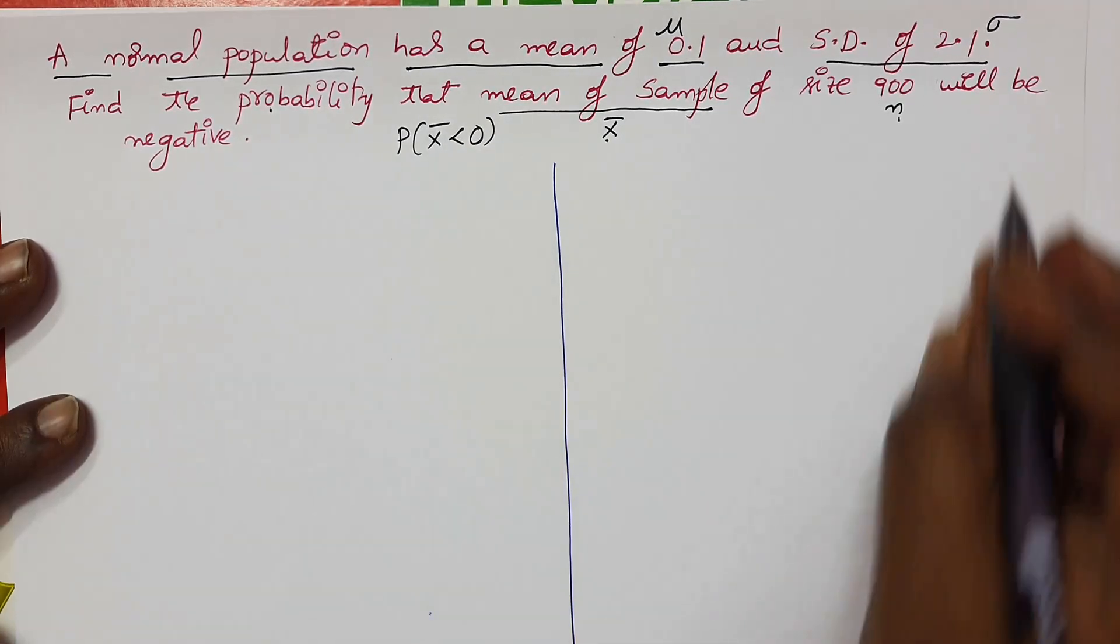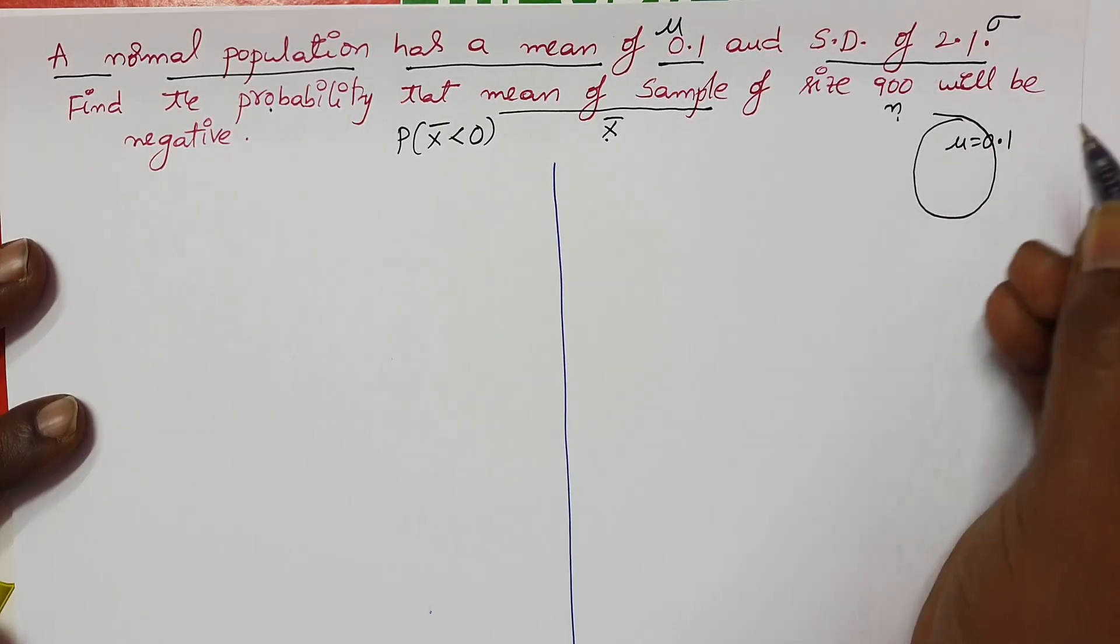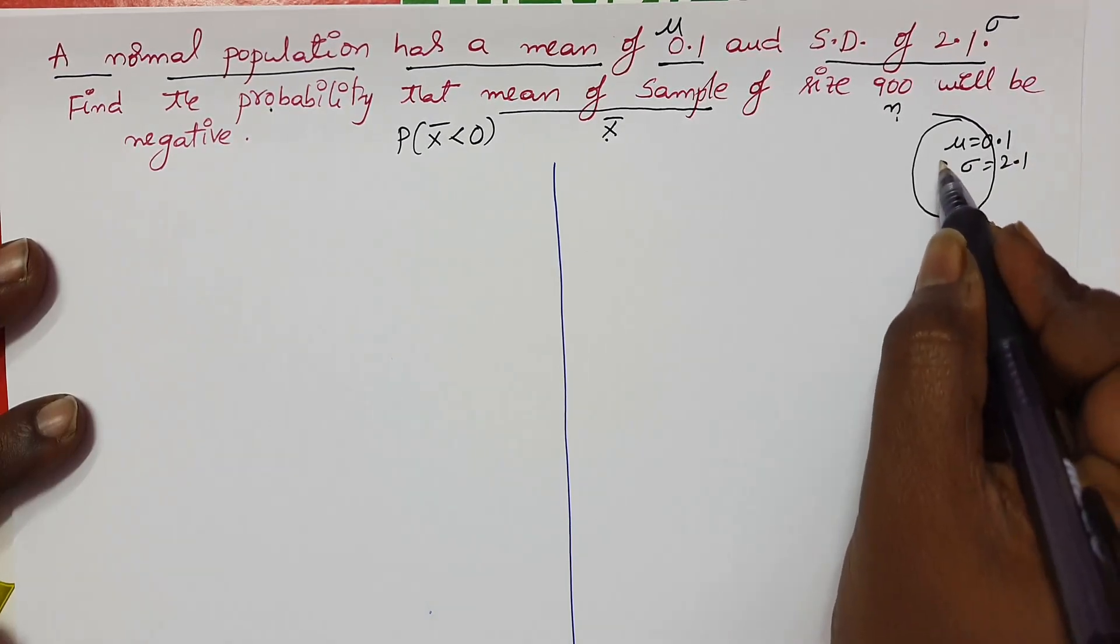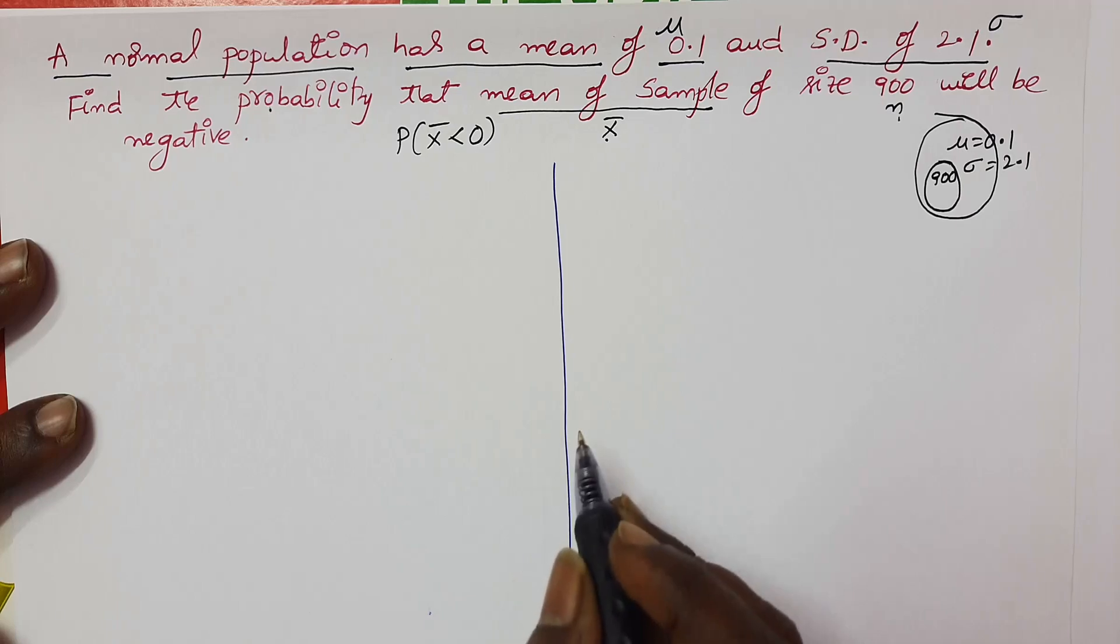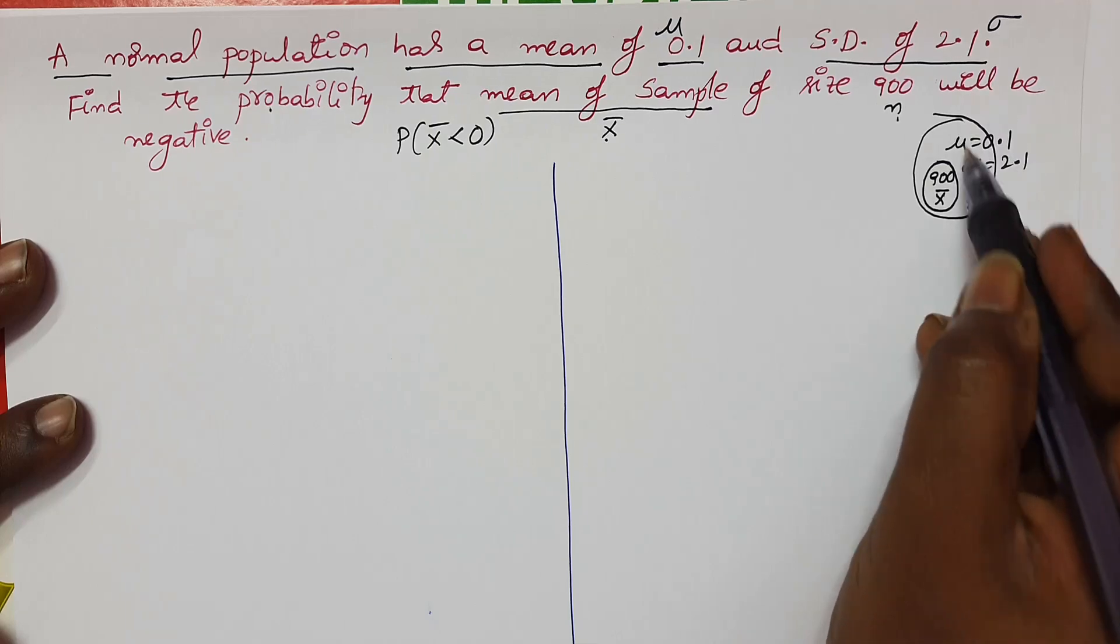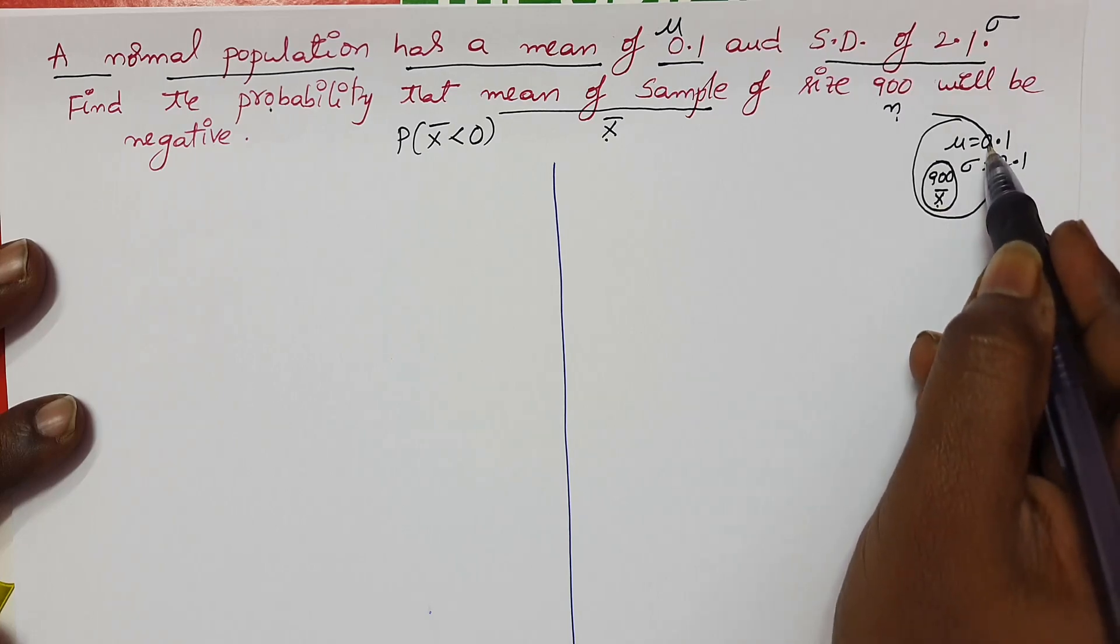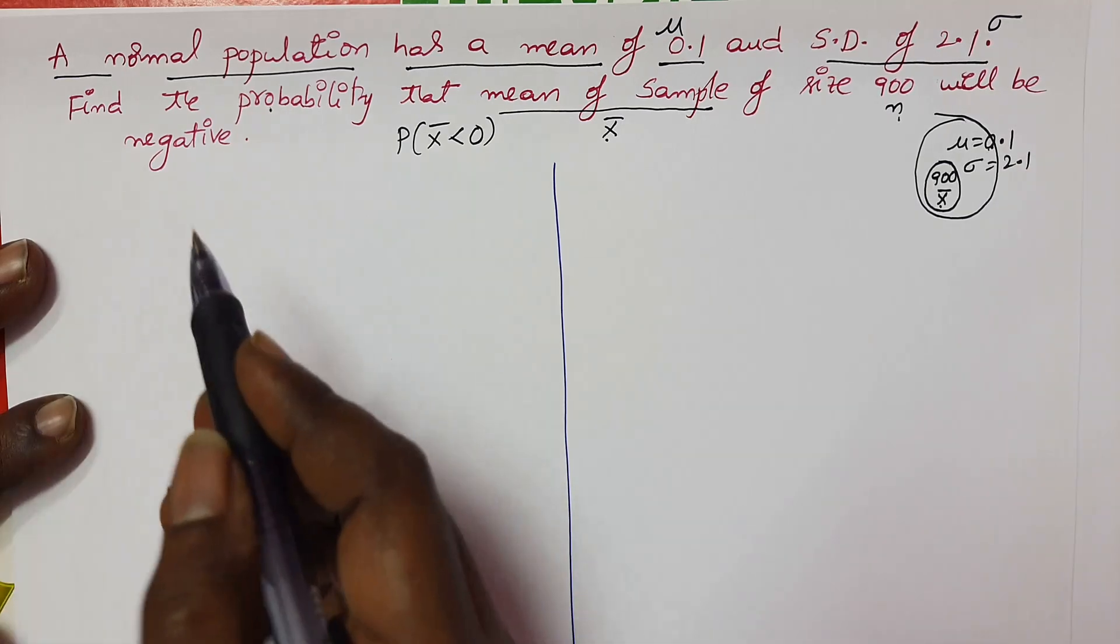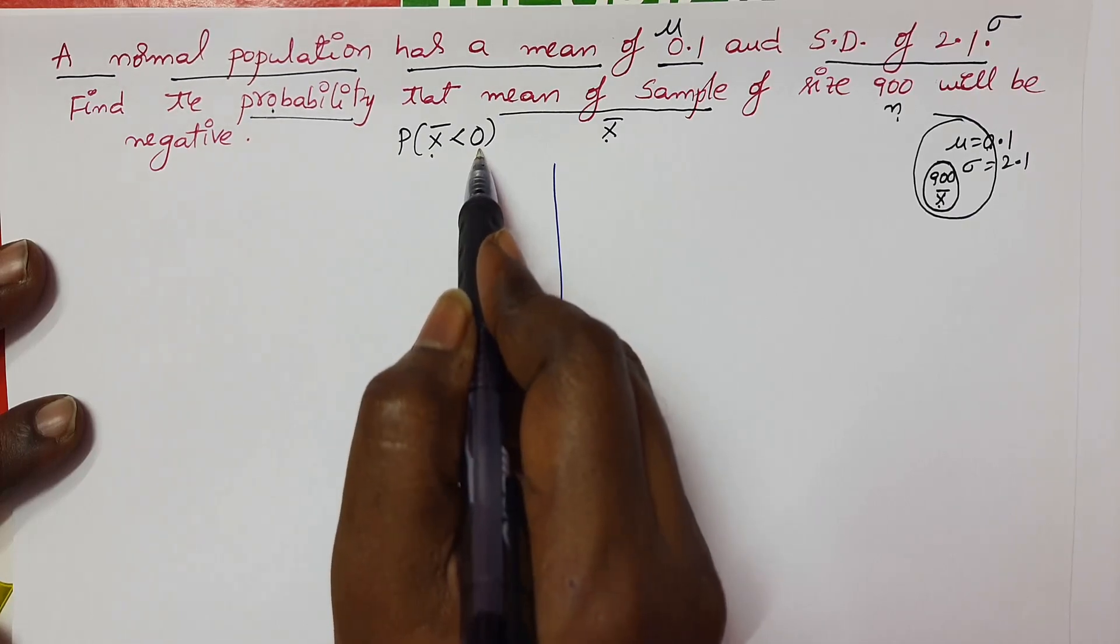Here the population is given to you whose mean is 0.1 and standard deviation is 2.1. A sample is given with size 900, so the sample mean x̄ may be surroundings of 0.1. There is a chance that x̄ lies above 0.1 or less than 0.1. Here particularly he asked what is the probability that x̄ value is less than 0, it may be negative.